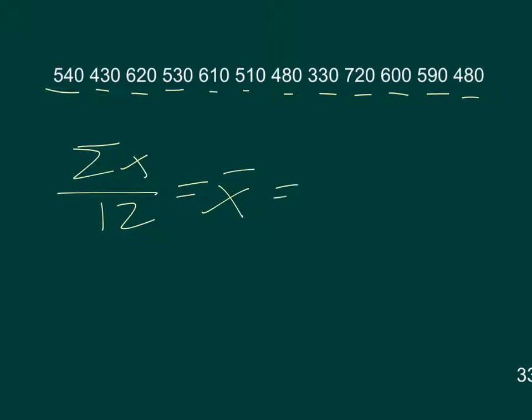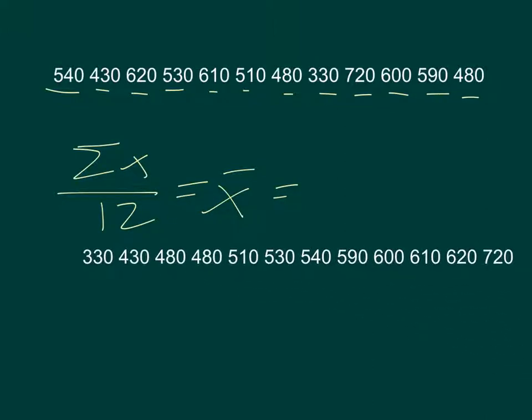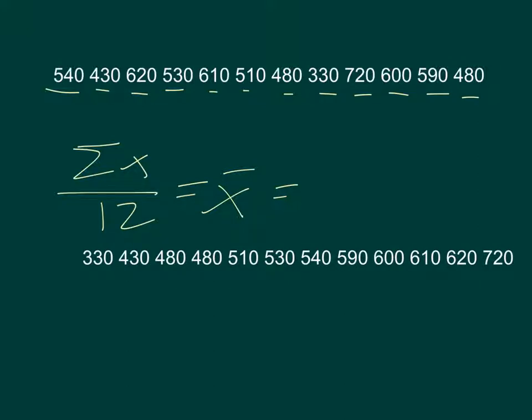Now to find the median, you'd have to first list them lowest to highest. Luckily for you, I've already done it. So you see them listed lowest to highest. 5, 6, 7, 8, 9, 10, 11, 12. There they are.